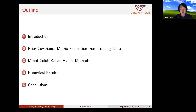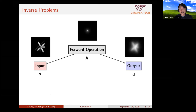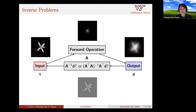I'll start with some introduction and problem setup. Inverse problems consist of some input, a forward operation, and an output. If the input is s, the forward operator is matrix A, and the output is parameter d, then to recover the input from a given output we may use the normal equation or some regularized solution. However, without a penalty term or regularization we get something wrong, so we need some prior on our input.